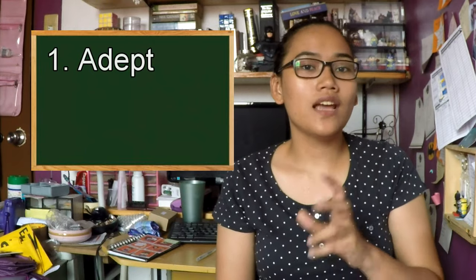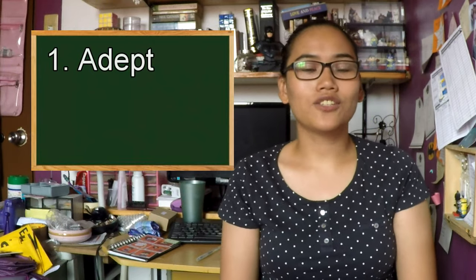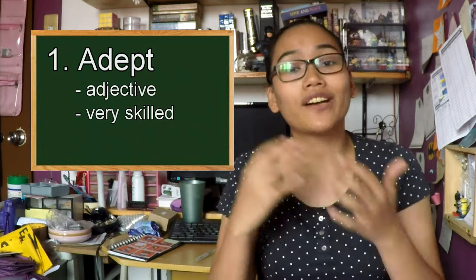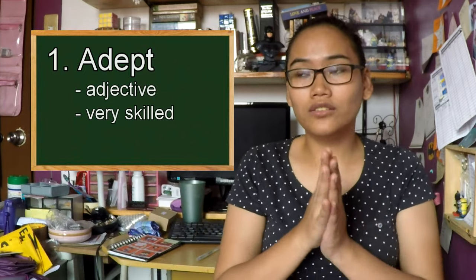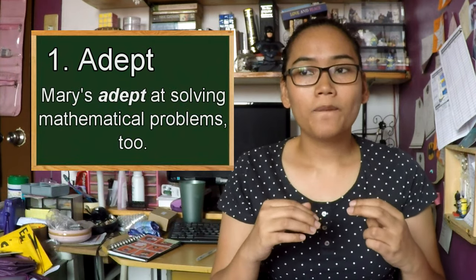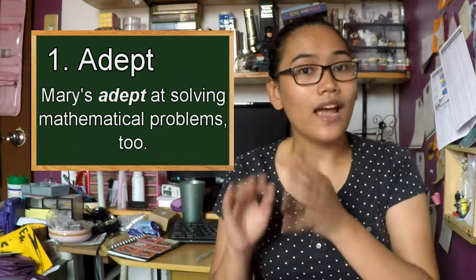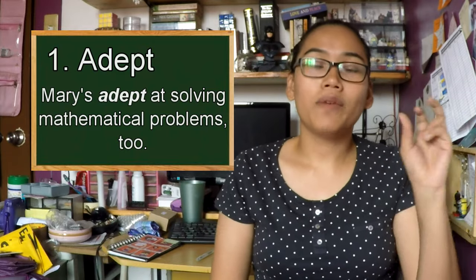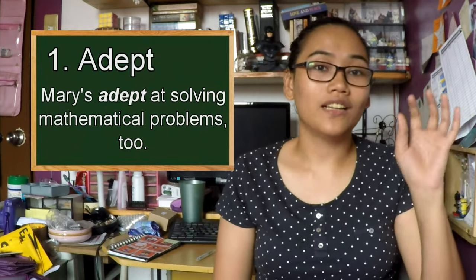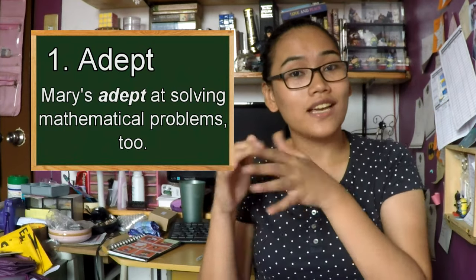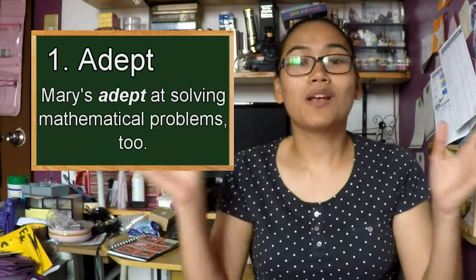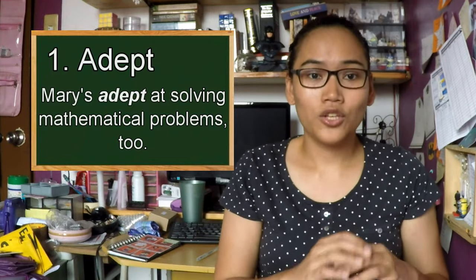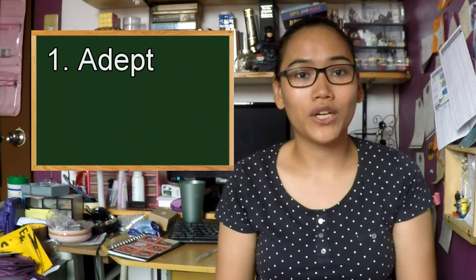Same spelling — A-D-E-P-T — ang pagkakasabi naman is adept. So again: adept (noun, tao) versus adept (adjective). Pag adept na siya, ibig sabihin hindi na siya tao — isa na siyang adjective. It's a way for you to describe a person. What you could say would be: Mary is adept at solving mathematical problems too. Ibig sabihin, belong si Mary dun sa setting na yun. So yung adept is a description of a person, yung adept — tao na mismo. Those are the two definitions of the word adept.